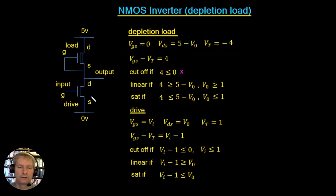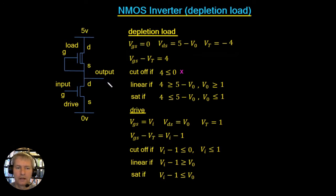Let's see how the device actually works. With a low voltage at the input, V_in is less than or equal to one volt, so the drive device is switched off. With that device off, we effectively have an open circuit there, and the depletion load charges up the output — first using saturation current up to one volt, then all the way up to five volts in the linear region. This is much better than the enhancement load, which only goes up to four volts.